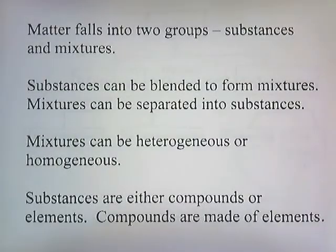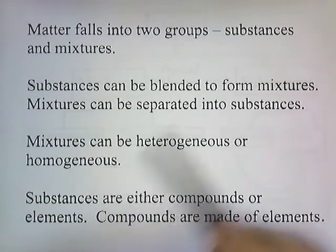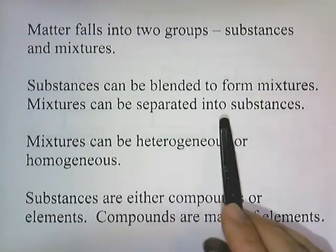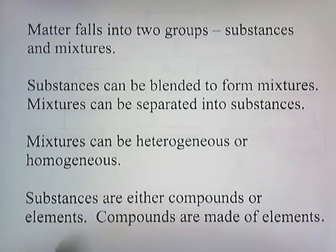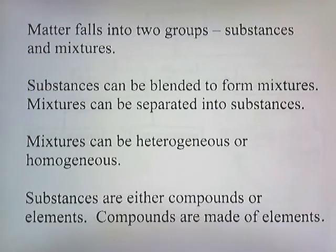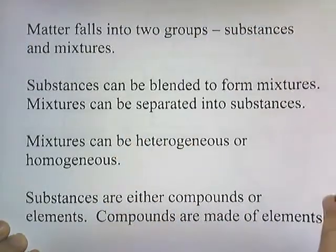Let's give a summary of all the different types and categories of matter. Matter tends to fall into two groups: substances and mixtures. Substances can be blended to form mixtures, and mixtures can be separated into substances. Mixtures can also be heterogeneous or homogeneous. Substances are either compounds or elements, and compounds are made out of elements.